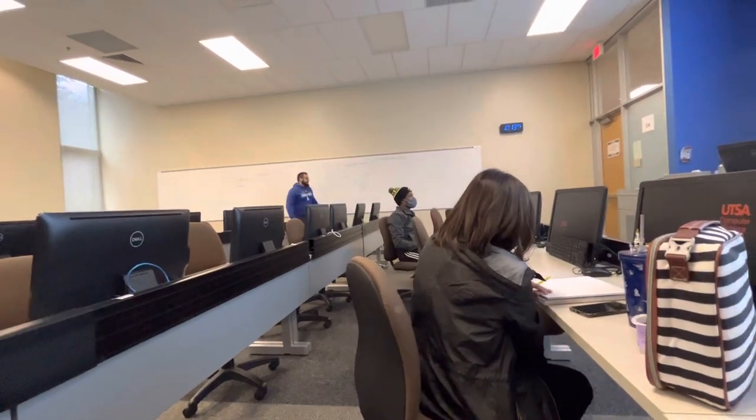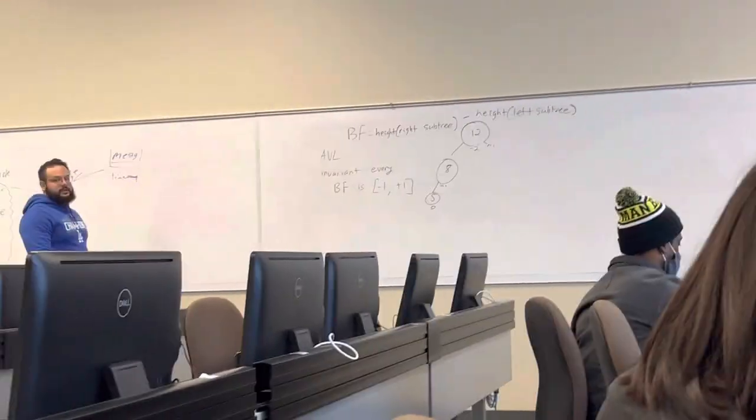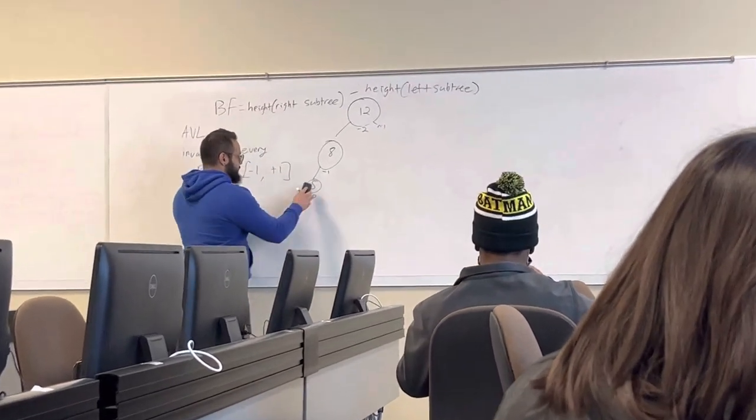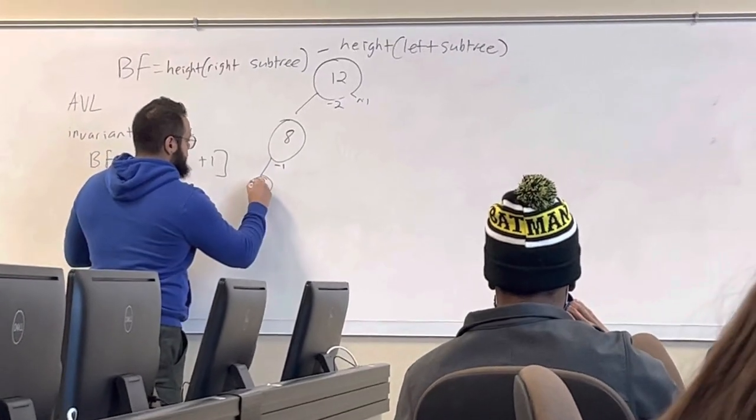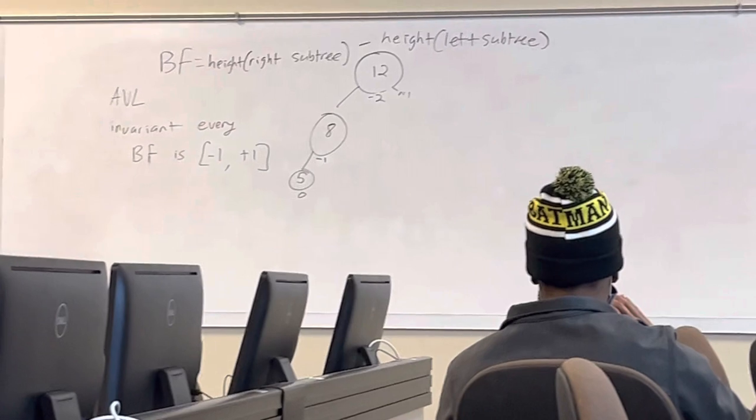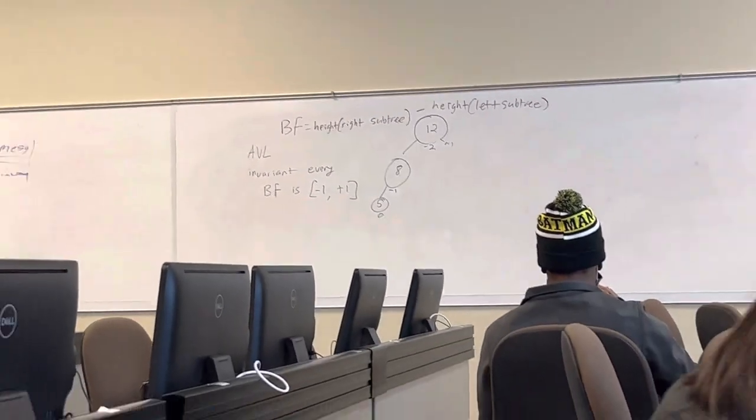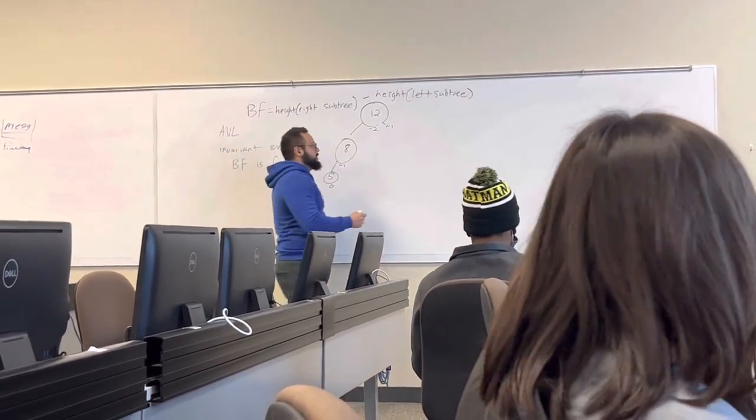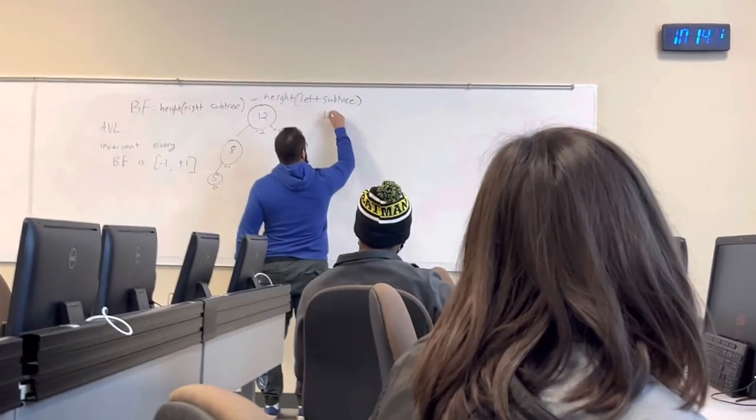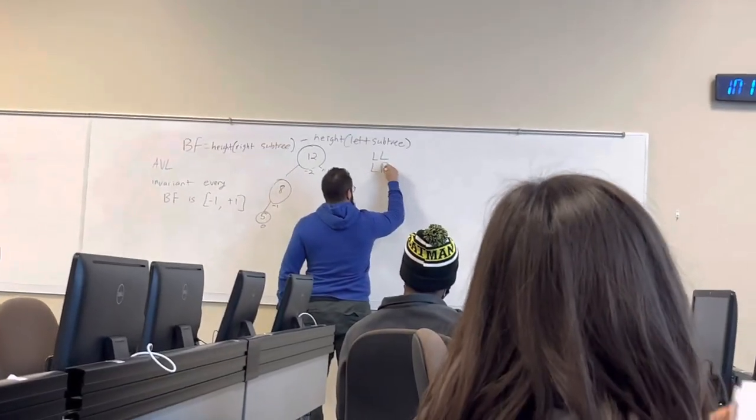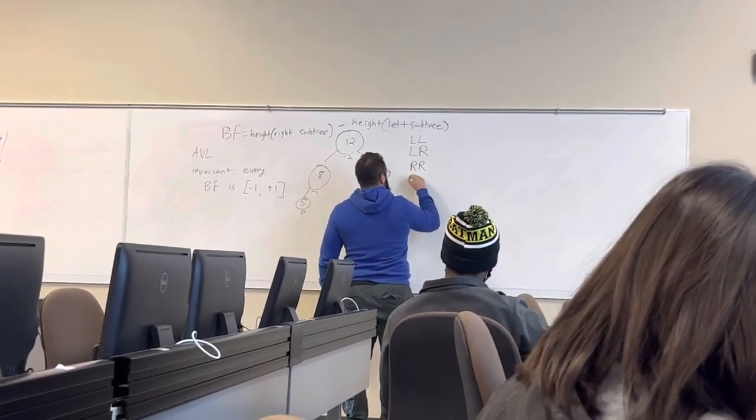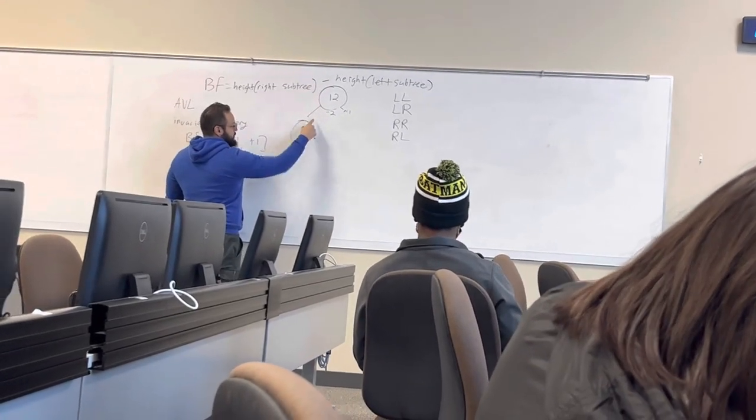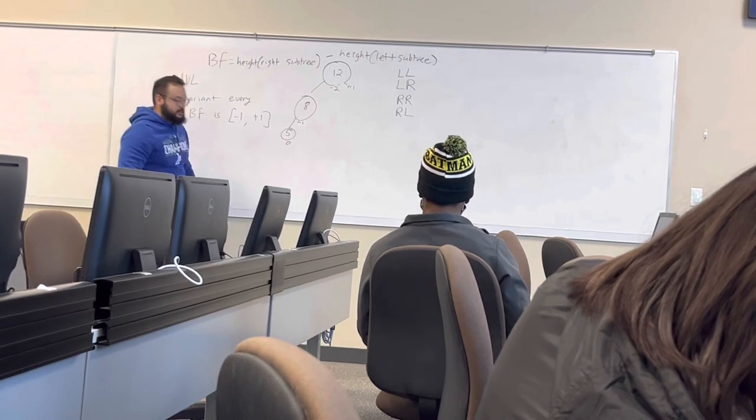So, with an imbalance like this, we have to determine where the imbalance is coming from. And in this case, we just inserted a five, right? Looks like an S, but it's supposed to be a five. My fives are terrible. Still looks like an S, whatever. So, we know we just inserted a five, right? So, how can I determine where the imbalance is? And by where, I mean there's four scenarios. There's a left-left, there's a left-right, there's a right-right, and there's a right-left. And by left-left, I mean this guy's imbalanced, but the node that's responsible for the imbalance is left-left.